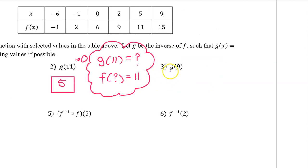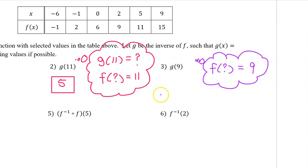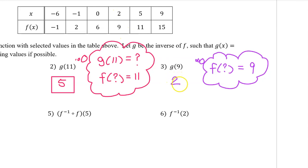Number 3: we need g at 9 — that's the inverse of f at 9. To evaluate the inverse at 9, you ask yourself, f at what equals 9? f at 2 equals 9. So that is the answer.